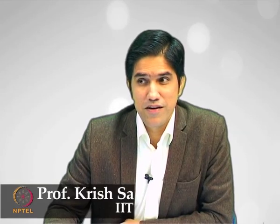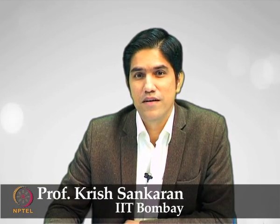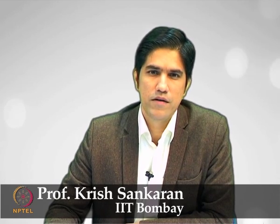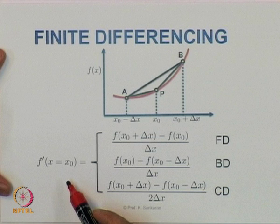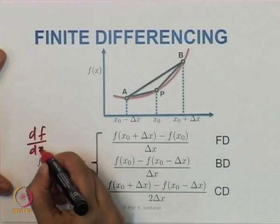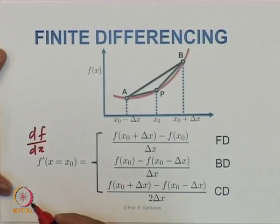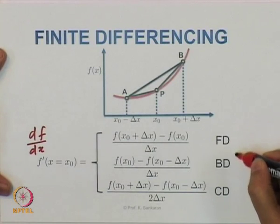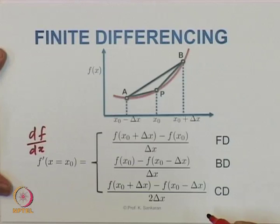We have introduced the finite difference method, starting from a historical perspective and covering basic finite differencing techniques. In the earlier module we discussed how to compute the value of df/dx at point x₀, using differencing schemes which we called forward differencing, backward differencing, and central differencing.